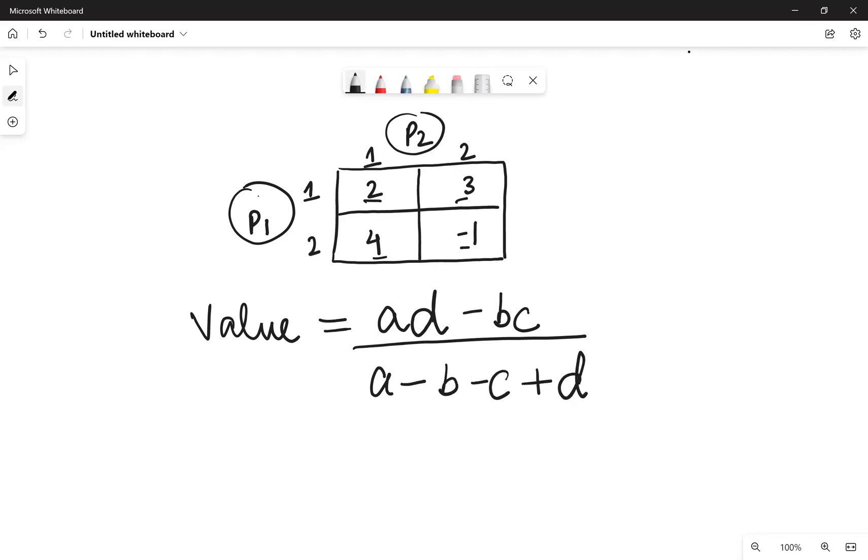So here A is 2, B is 3, C is 4, and D is minus 1.